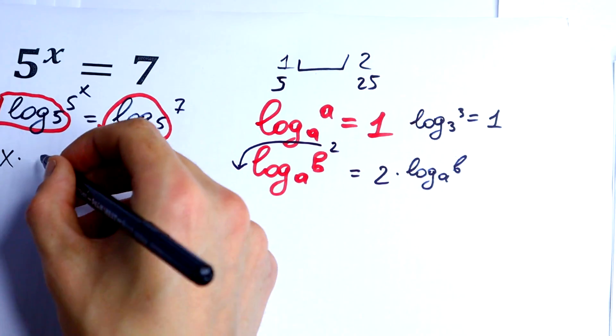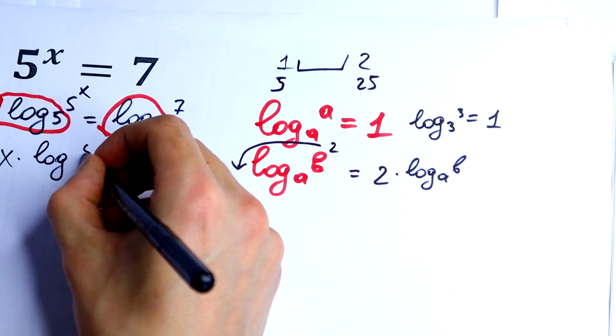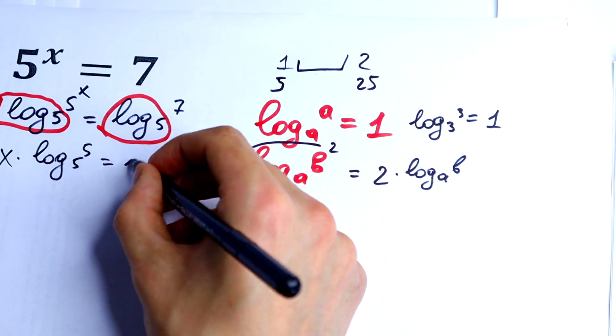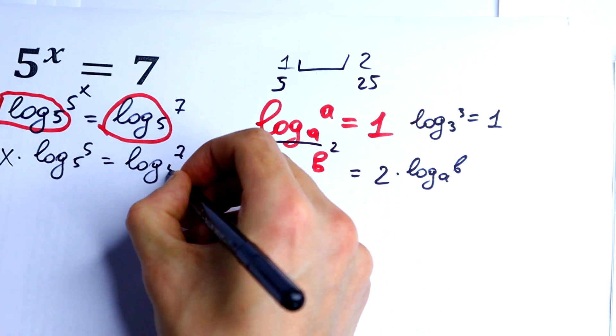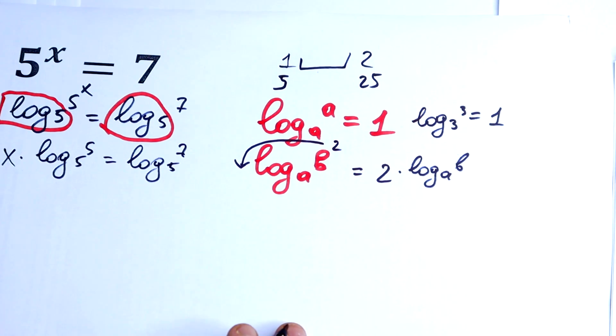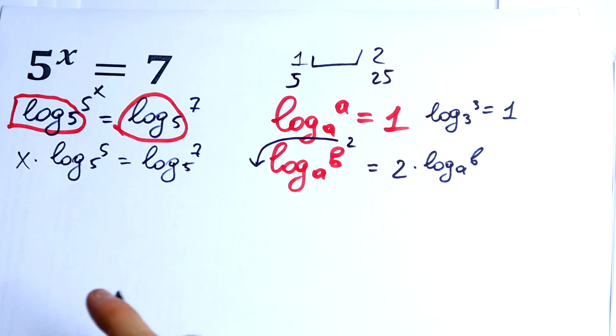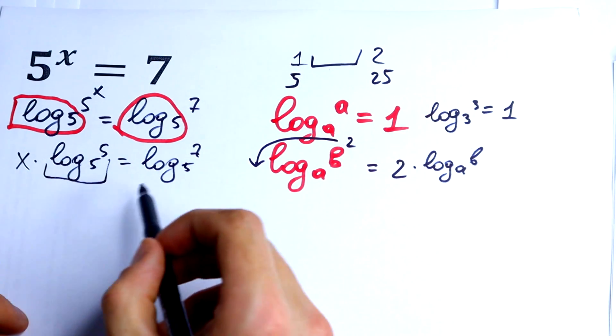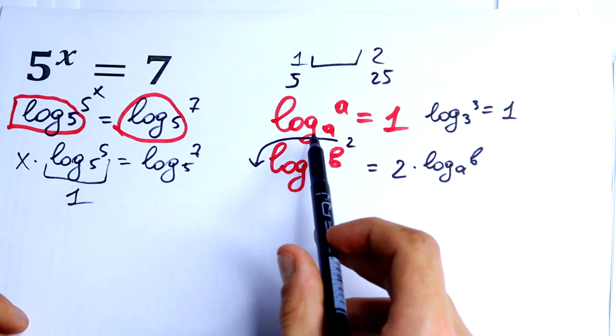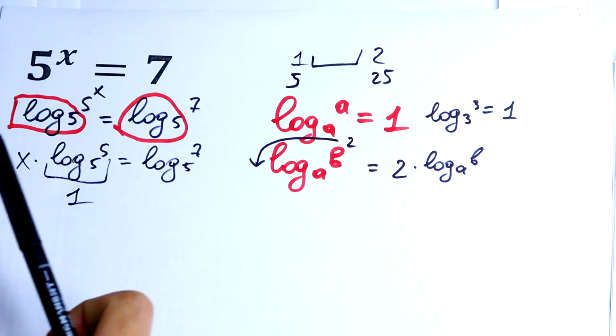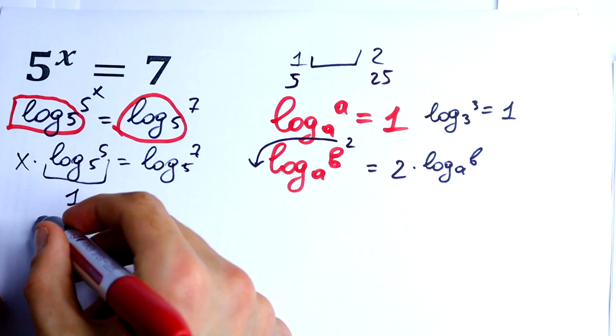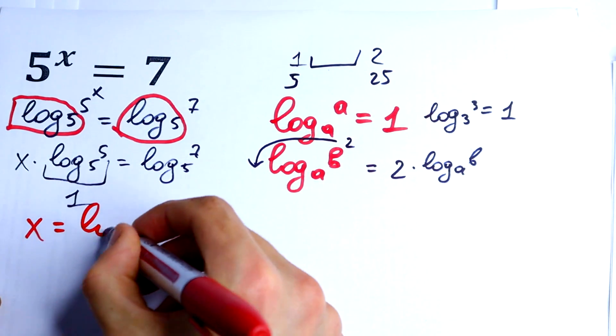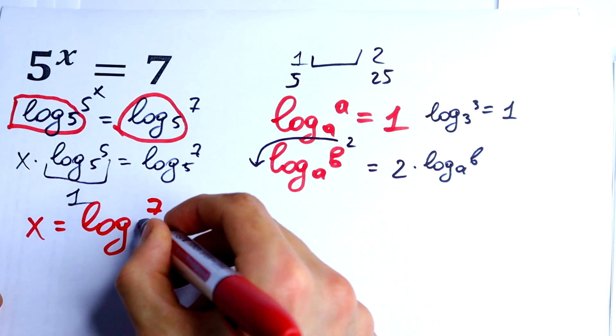We will have x times log base 5 of 5 equals log base 5 of 7. This equals 1 using this rule, and x equals log base 5 of 7.